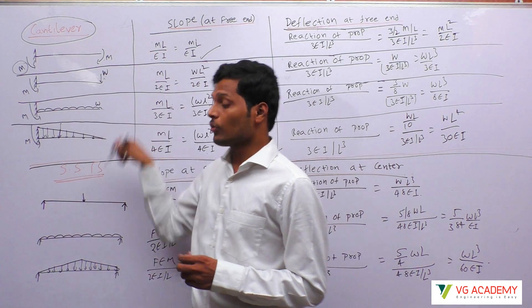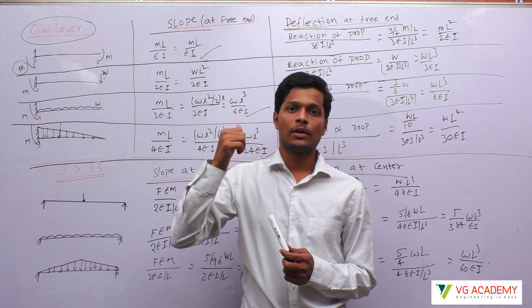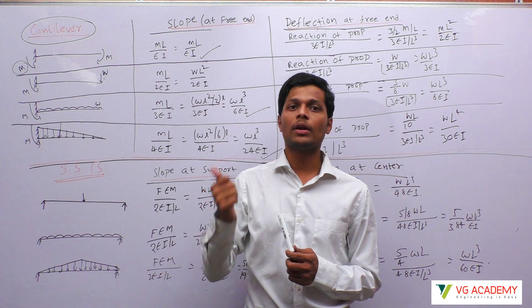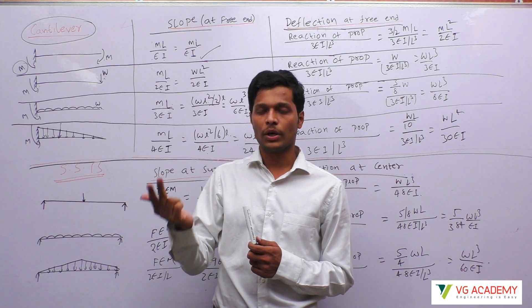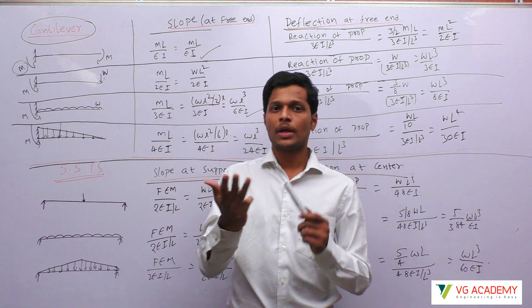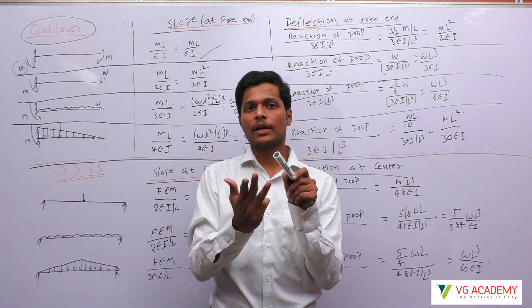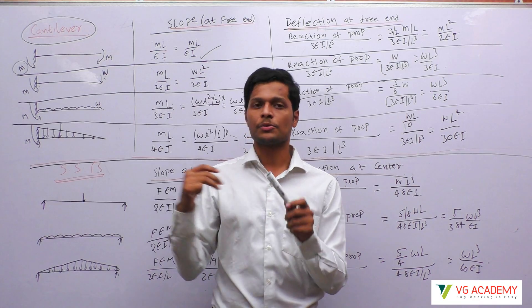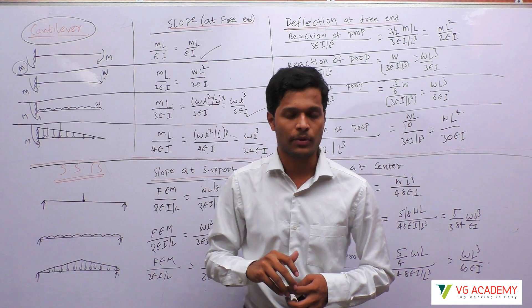So you have to remember this order: concentrated couple, concentrated load, UDL, UVL — divided by EI, 2EI, 3EI, 4EI respectively. Substitute the moment value to get the final answer. That is all.